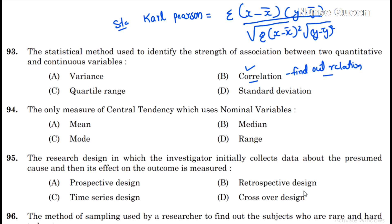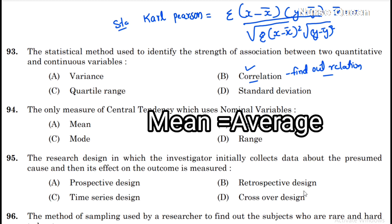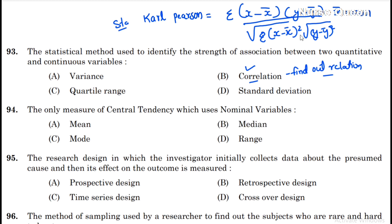In this formula, sigma means sum. Sigma (x minus x-bar) times (y minus y-bar) divided by the square root of sigma (x minus x-bar) squared times the square root of (y minus y-bar) squared. X-bar is equal to the mean of x, and y-bar is equal to the mean of y.